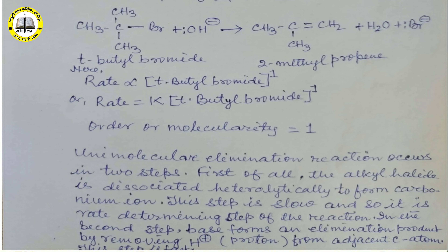It is tertiary butyl bromide and sodium hydroxide. Sodium hydroxide is broken into Na⁺ sodium plus ion and OH⁻ that is hydroxyl ion. Here we only write OH⁻. So (CH₃)₃CBr + OH⁻ gives (CH₃)₂C=CH₂ plus H₂O plus Br⁻.